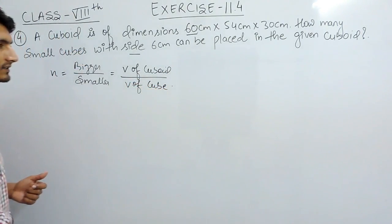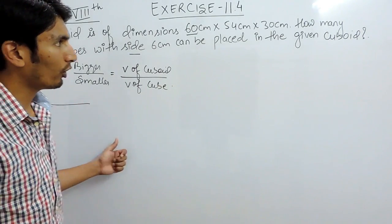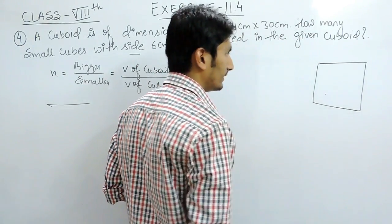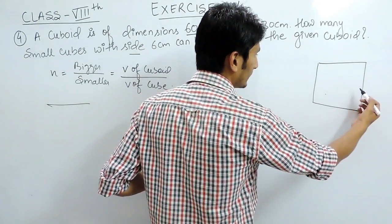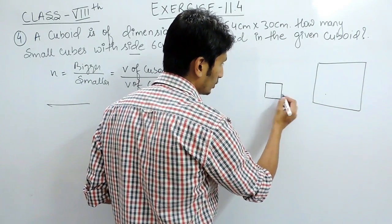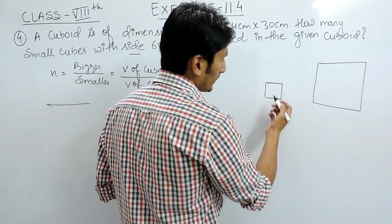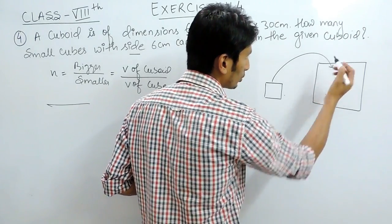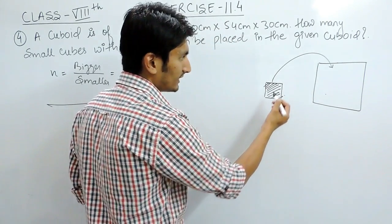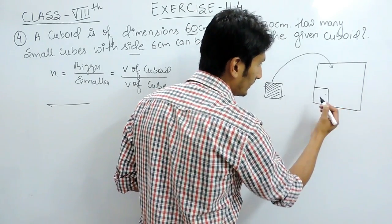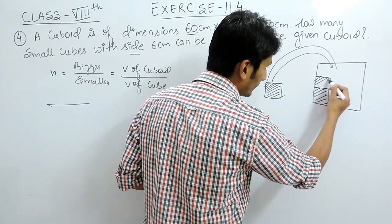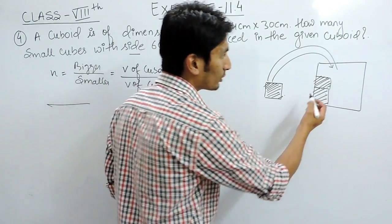Let me explain by giving an example. Suppose this is a cuboid tanker and you have to fill this with water using a small cube. Clearly, because you are filling the water, they are talking about volume. When you put this first cube inside, this much water will be covered inside the cube. Similarly, when you put another one, another cube will fill another part of this cuboid.